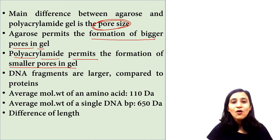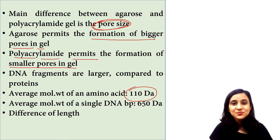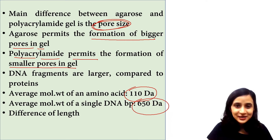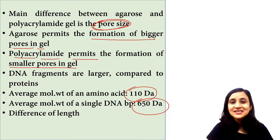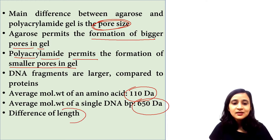If we talk about size, the molecular weight of an amino acid is 110 Daltons, whereas the molecular weight of one DNA base pair is 650 Daltons. That means the molecular weight is far greater in DNA compared to protein, and hence the overall size or molecular weight of a DNA molecule is far greater as compared to protein.